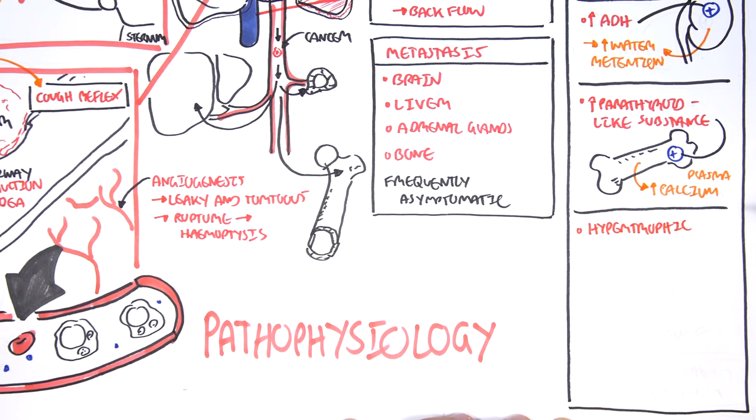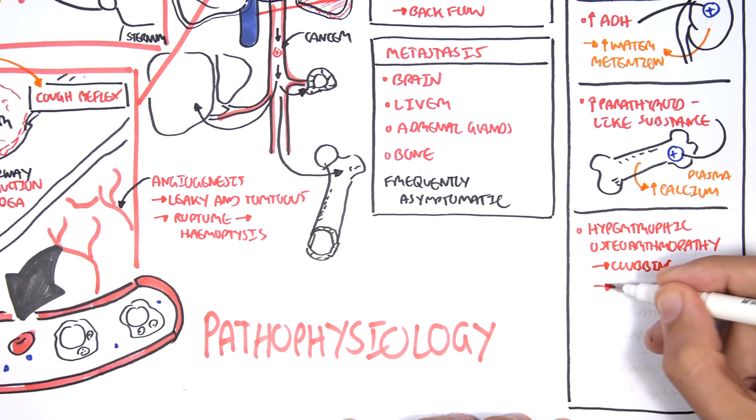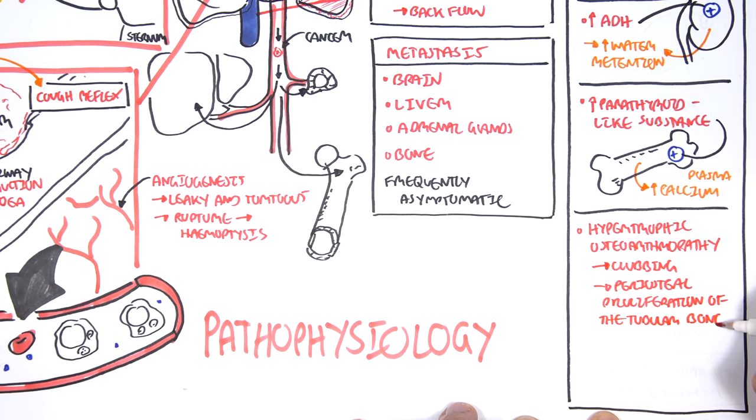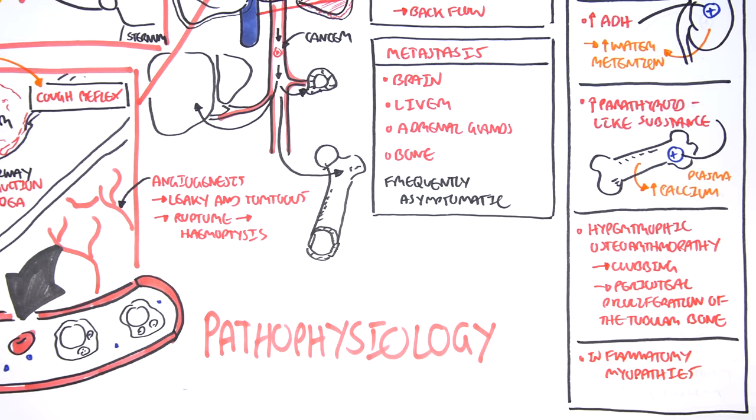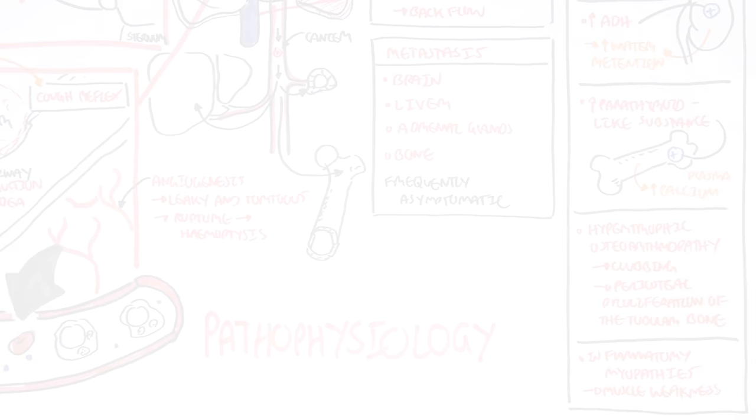Paraneoplastic syndrome also includes hypertrophic pulmonary osteoarthropathy leading to clubbing and periosteal proliferation of the tubular bone. And lastly, inflammatory myopathies can result from lung cancer which leads to muscle weakness. And so that is why we see signs of finger weakness upon examination of patients with lung cancer.